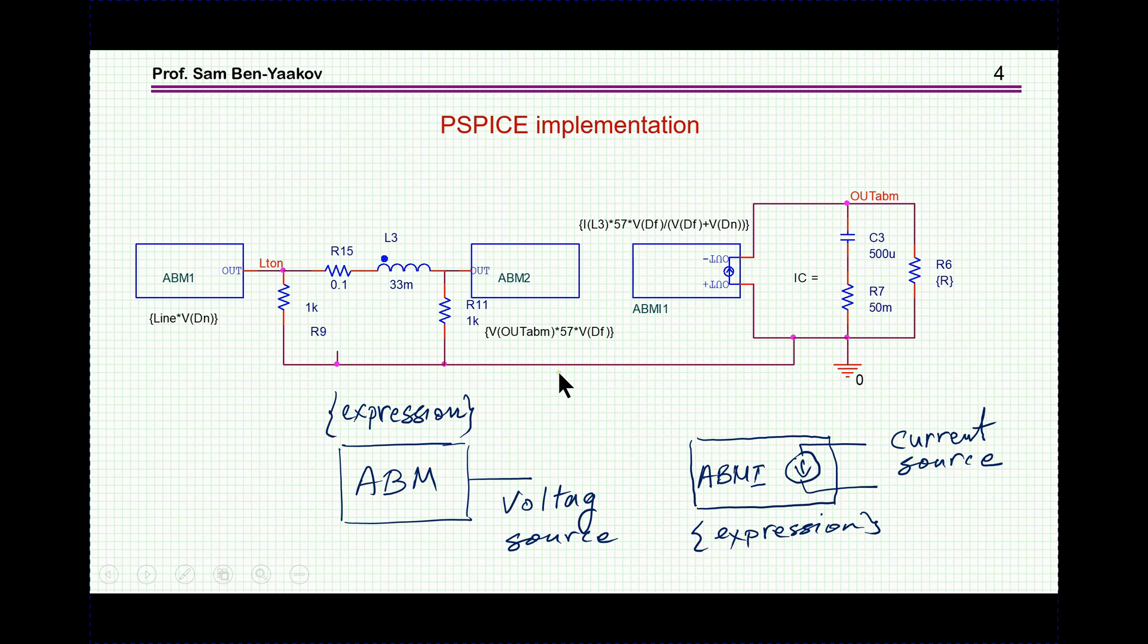I can represent this with average behavioral models. Average behavioral models are just voltage sources or current sources. This is a voltage source, the output of which, the numerical value of the output, is equal to the value of this expression at a given instant. That is, you can write here an expression, and the voltage here will be just the value of this expression as the simulation is running.